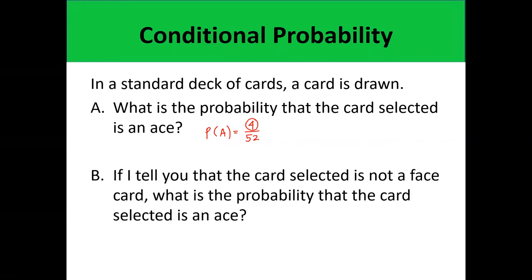Now, if I tell you that the card selected is not a face card, what is the probability that the card selected is an ace? We know that an ace card is not a face card, but we were told the card selected is not a face card. So we shall remove the face cards from the sample space. Our sample space is now not 52 but 40, because we remove the 12 face cards: the 4 jacks, 4 queens, and 4 kings. So the probability that the card selected is an ace would be 4 out of 40.